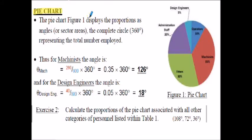The pie chart is another method used to express the information on the previous slide associated with the various job categories of the company. The pie chart displays proportions as angles or sector areas. To complete a circle we need 360 degrees, and 360 degrees relates to the total number of people employed, or the population.